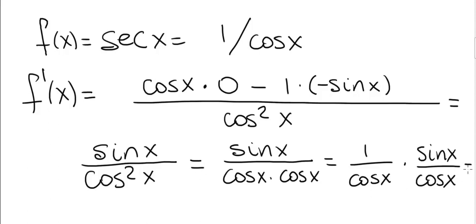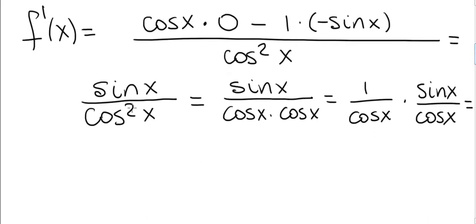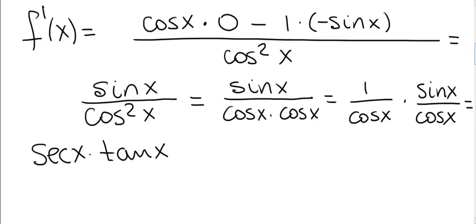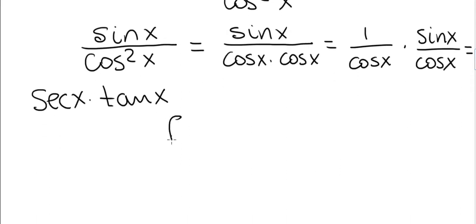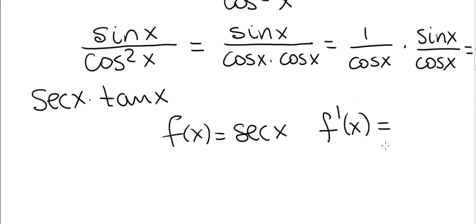This is how the derivative of secant is written in standard form. 1 over cosine of x is secant, and sine x over cosine x is tangent of x. That's the standard form of the derivative of the secant function. To summarize: f of x equals secant of x, and its derivative f prime is secant x times tangent x.